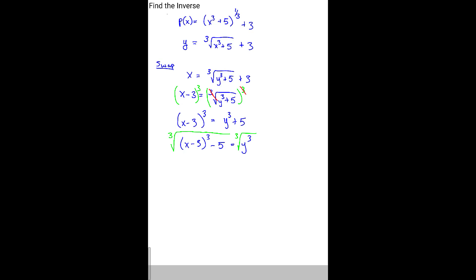So at the very end, your final answer would be the cube root of all that jazz on the left side. x minus 3 to the third minus 5 equals y. That would be the inverse of your p of x function.